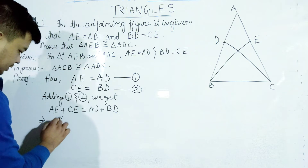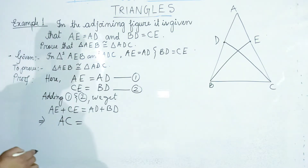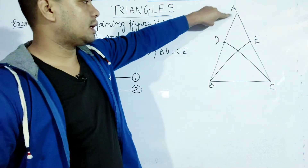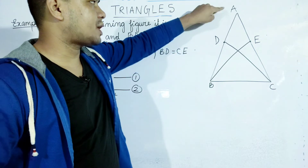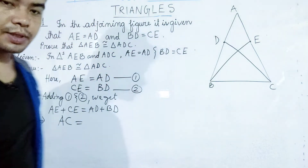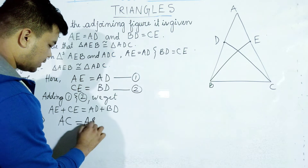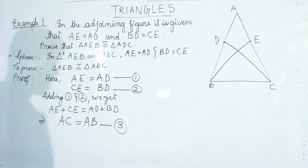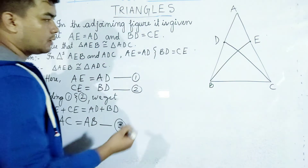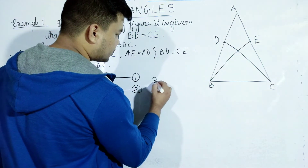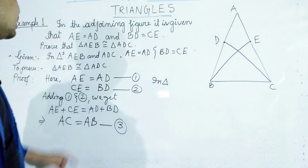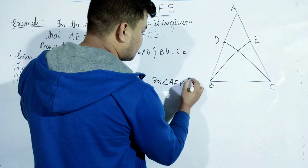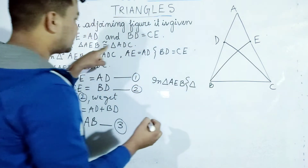AC is equal to AD plus BD; AD is equal to AB — equation number 3. In triangle AEB and triangle ADC.